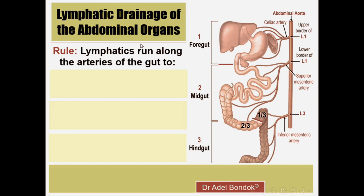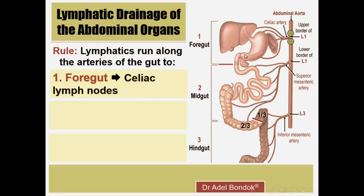Regarding the lymph drainage of the abdominal organs, the basic concept again is that lymphatics run along the arteries of the gut. We divide the gut into foregut, midgut, and hindgut. The foregut is supplied by the celiac artery, the midgut by the superior mesenteric artery, and the hindgut by the inferior mesenteric artery. Lymphatics from the foregut drain along branches of the celiac artery to the celiac lymph nodes.